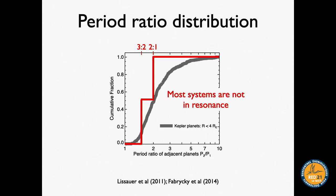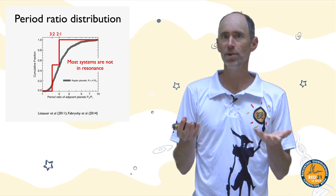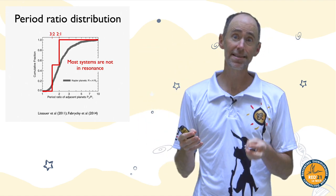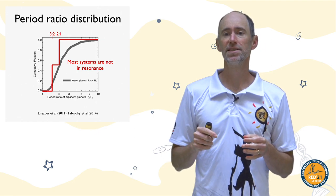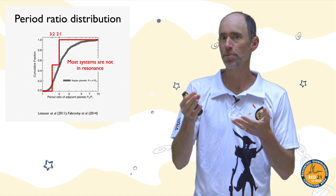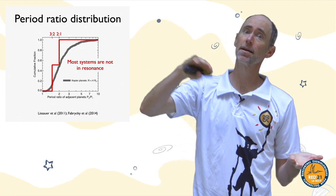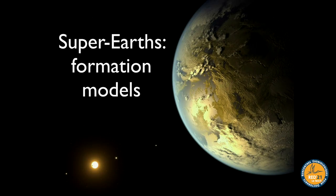Looking at the cumulative period ratio distribution, what's most interesting is not what it looks like but what it doesn't look like — it does not look like a staircase. Many expected a staircase because mean motion resonances between planets should be common. Resonances occur at integer ratios like 3:2 or 2:1. If half of planet pairs were in 3:2 resonance and half in 2:1, we'd get a red staircase — but instead we see a smooth gray curve.